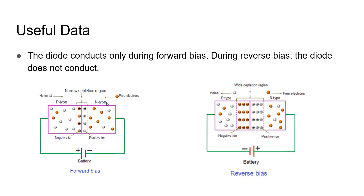The P and N type materials, when they are brought together, will form a small depletion region. This is because the P type material will have a majority of holes and the N type material will have a majority of electrons. Due to the electrostatic attraction between the protons and the electrons, there will be a small depletion region forming in a PN diode.